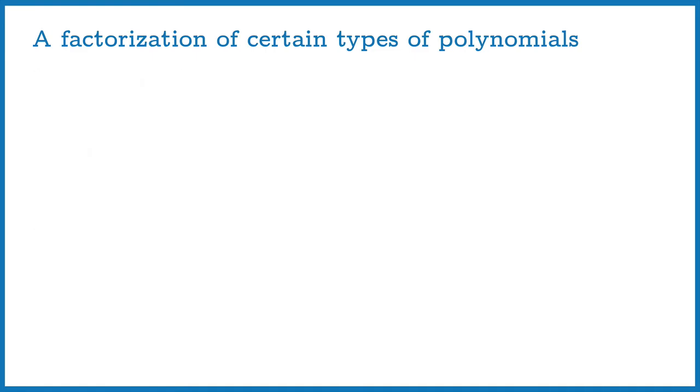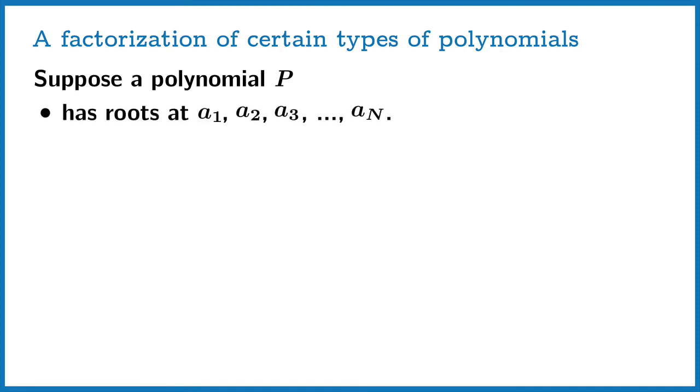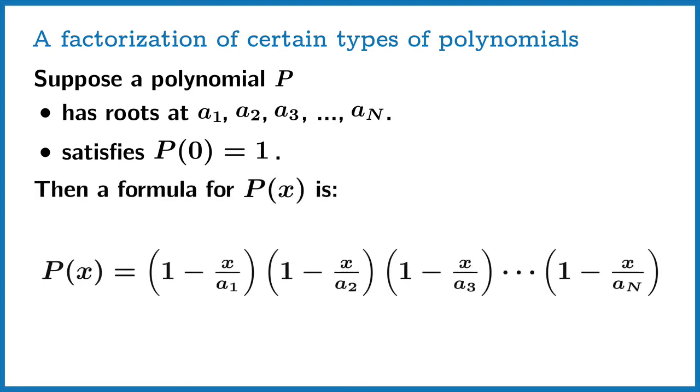Now, this generalizes completely. So if you had a polynomial whose roots were a1, a2, a3, all the way through an, and p of zero is one, then a formula for p of x is clearly going to be this. So just by multiplying together these types of terms, you're going to get the polynomial you need. All right, so let's go back to our problem.